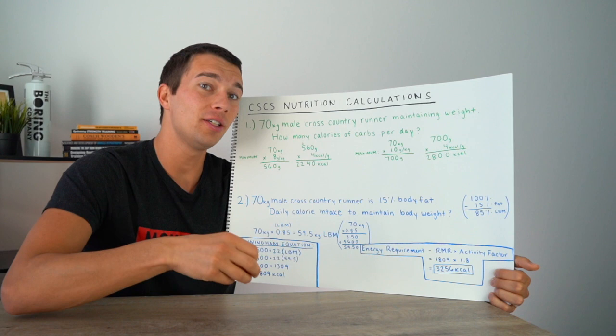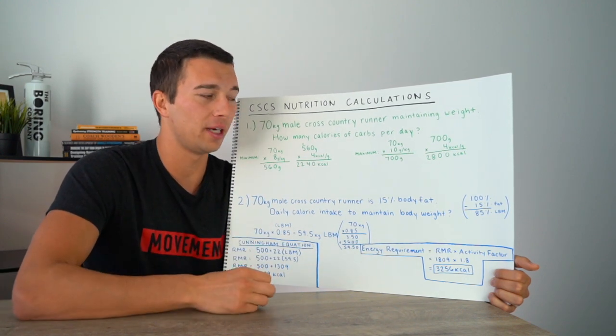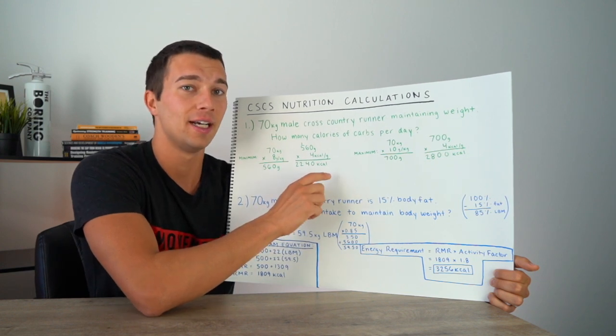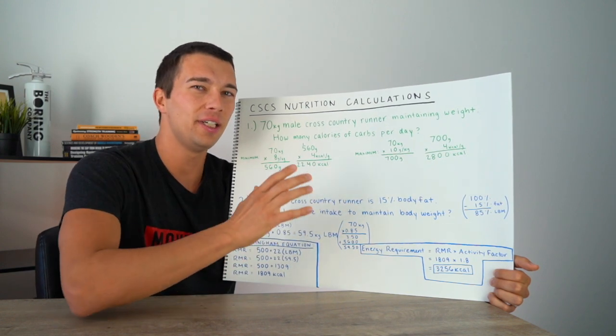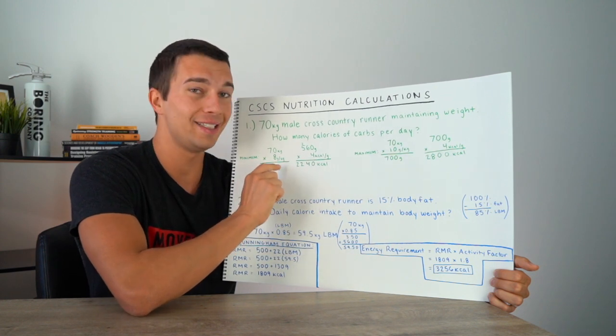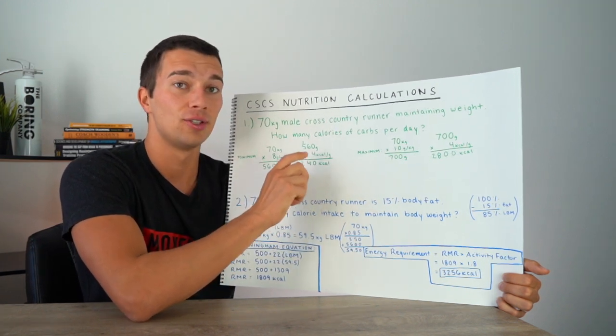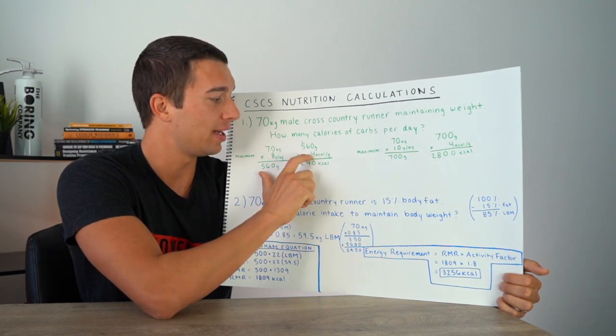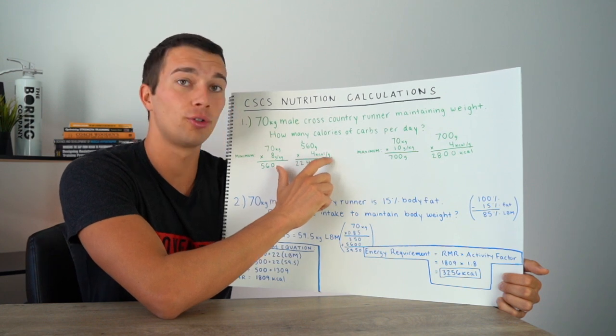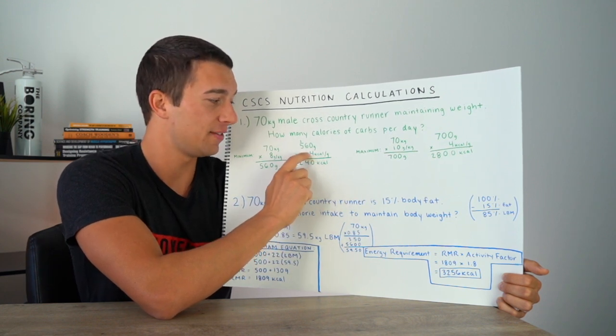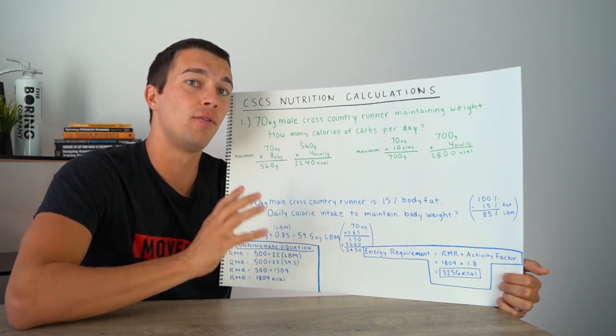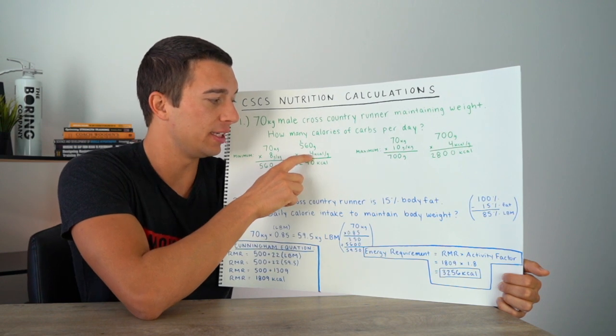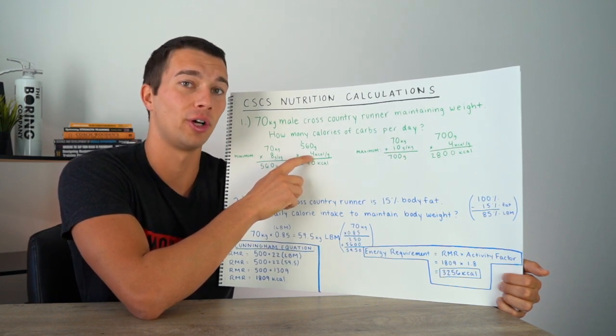So we're not done there with that 560 grams, unless the answer choices are in grams, but in this case, the answer choices are in calories. You can imagine like A is 2,000 calories, B is 2,500 calories, C is 3,000 calories, and we need to know which one's right. So we're gonna convert these grams into calories. So the way that we're gonna do that, we're gonna take 560 grams, and then multiply by the factor of four kilocalories per gram. What this means is this four means that for each gram, there's four calories of carbohydrate. This is actually the same number as protein. Protein is also four calories per gram.